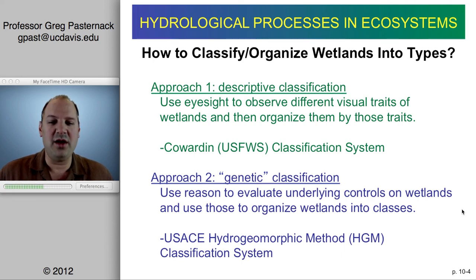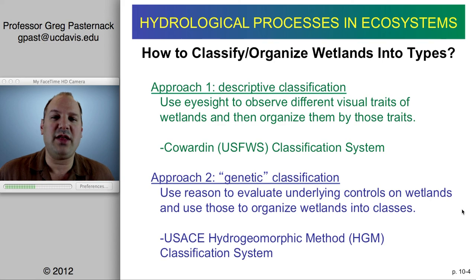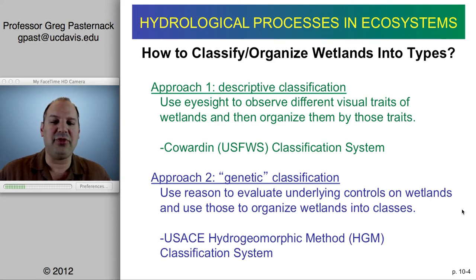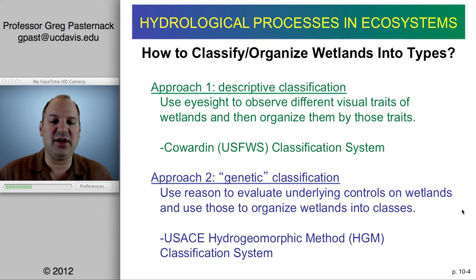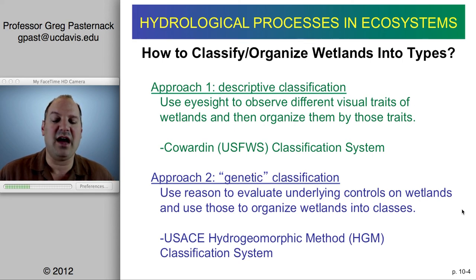Descriptive classification isn't used as much in creating new classifications today, but there is one that's still important: the Cowardin U.S. Fish and Wildlife Service classification system, which is based on that kind of description.